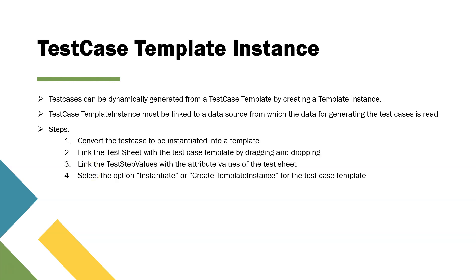The steps to generate or instantiate a template are: first, convert your test case to be instantiated into a template; link the test sheet with the test case template by dragging and dropping the test design sheet to the test case template; link the test step values with attribute values of the test sheet. If some values are not present you can specifically do that using the Excel parameter. The last step is to select the option instantiate or create template instance from the test case template options.